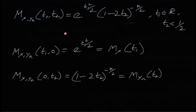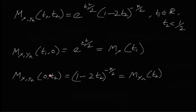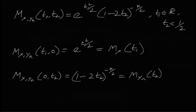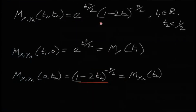Let us first find the MGF of X only, by plugging t2 = 0. We get M_X(t1) = e^(t1²/2), which is the MGF of the standard normal. Similarly, putting t1 = 0 gives the MGF of Yn. We can recognize that X follows a standard normal distribution and Yn follows a chi-square distribution with n degrees of freedom.